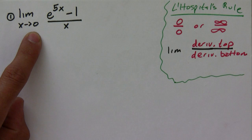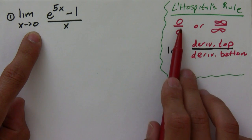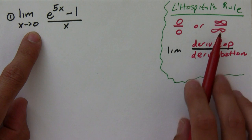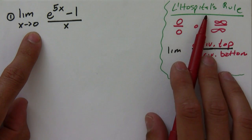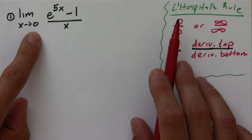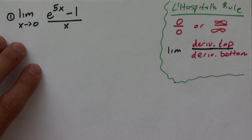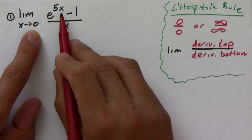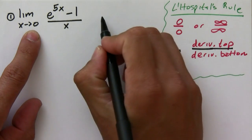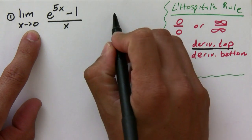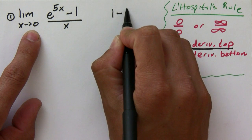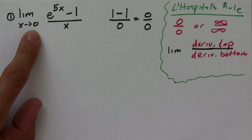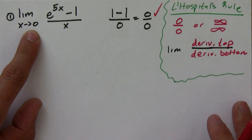The first thing you need to do — and this is the most important thing — is make sure that it really is of the form 0 over 0 or infinity over infinity. Otherwise you can't use L'Hôpital's rule, and you need to check it every single time. Here we're taking the limit as x approaches 0, so if we plug in 0, we have e to the 0, which is 1 minus 1, over 0. So this is 0 over 0, and this means we can use L'Hôpital's rule.